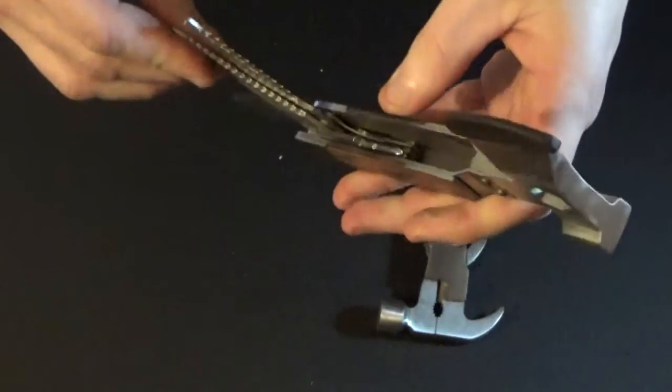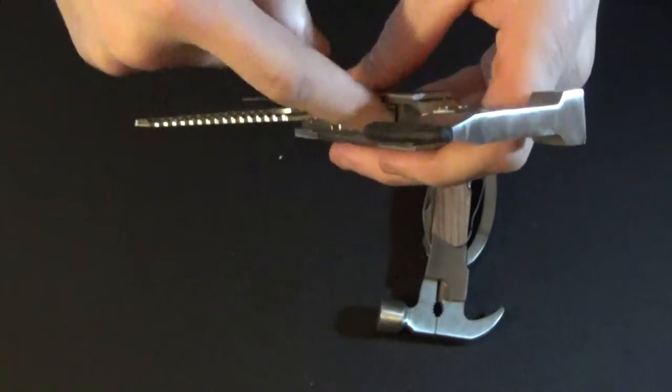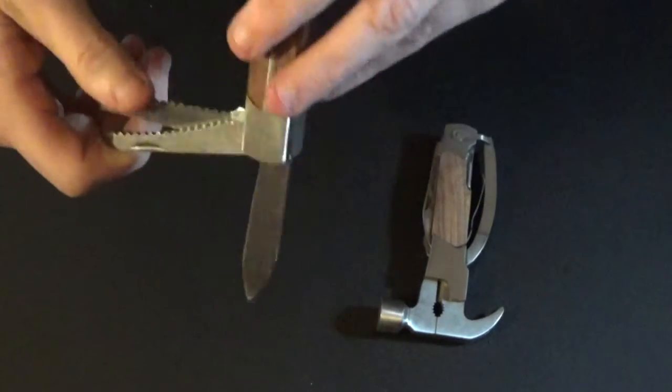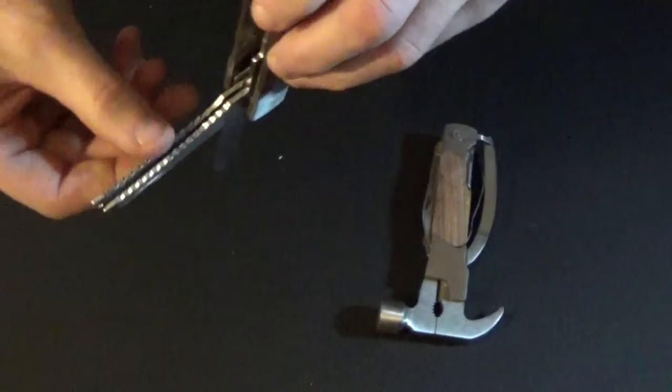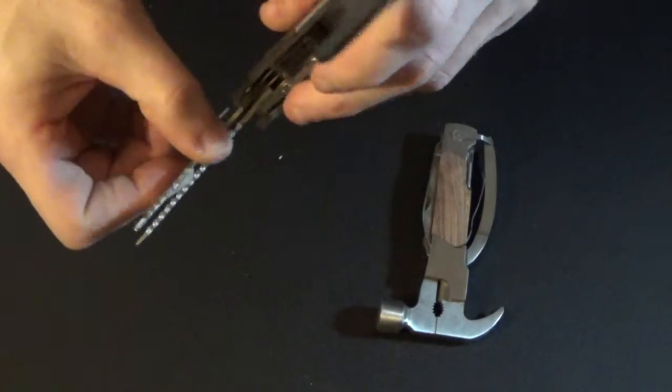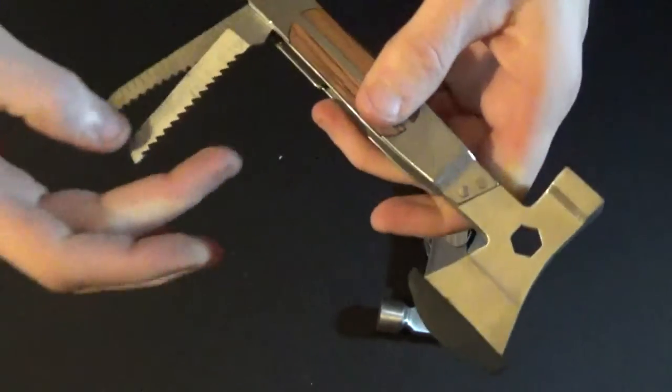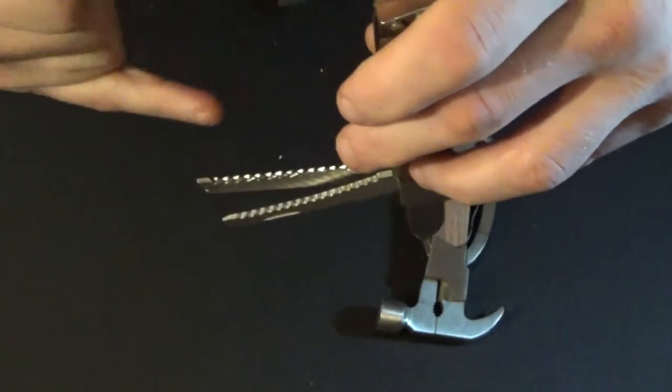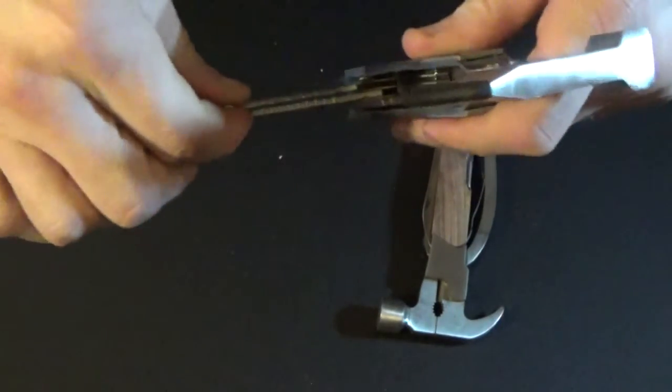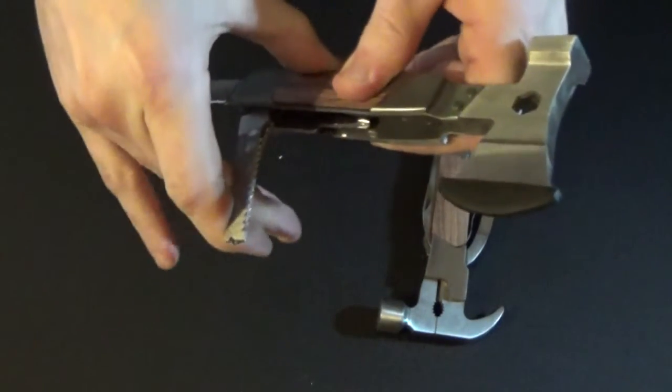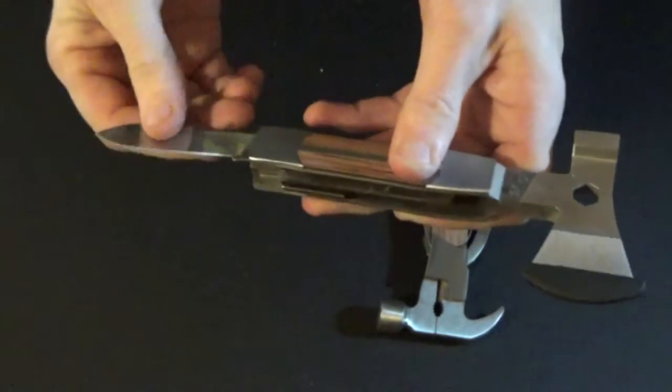This is MacGyver's hammer. Couple saws, a little measuring tool thing, a little screwdriver. I'm not even going to bother taking that out, but that saw looks pretty mean actually. Teeth go two different directions, so, curious to see how that works.